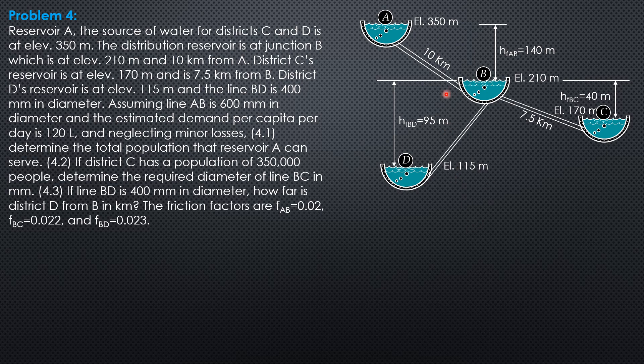So, for capacity of pipe AB, friction factor head loss is 140 equals 0.0826, friction factor 0.02, length 10 kilometers or 10,000 meters, discharge in AB squared over diameter in AB, which is 600 mm to the 5th, or 0.6 to the 5th meter.